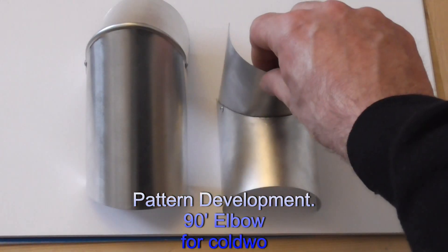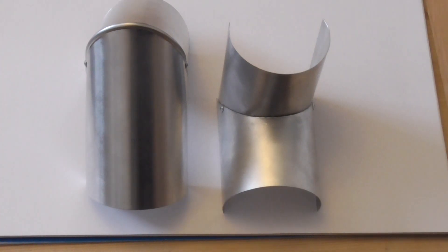Now we're going to learn how to make a quarter pattern which does both halves of the elbow. So, let's get started.